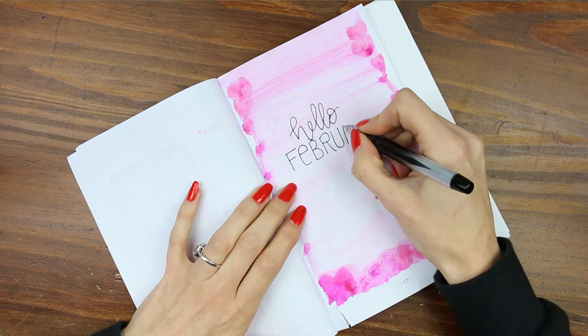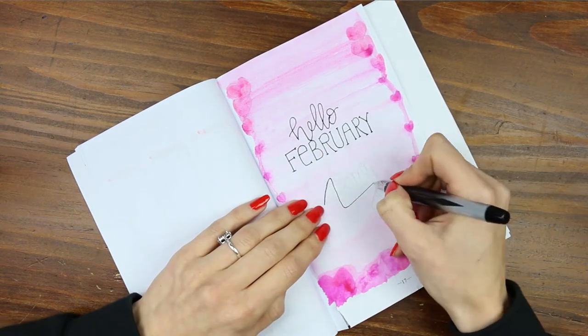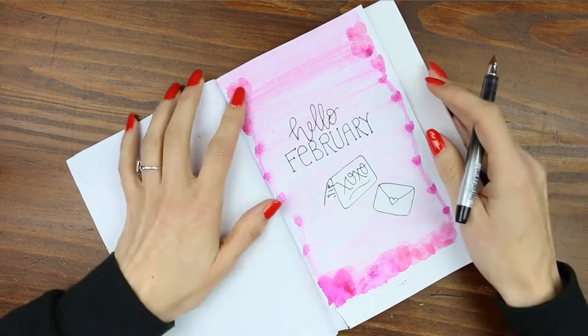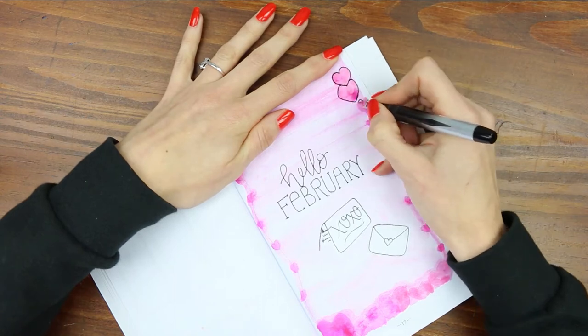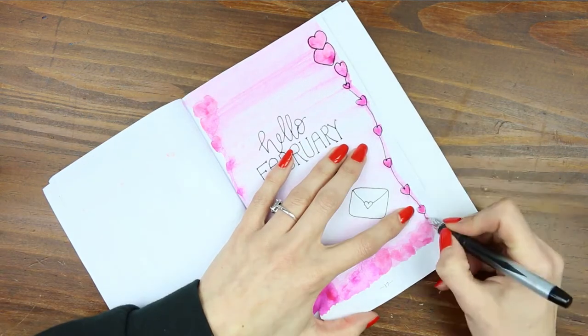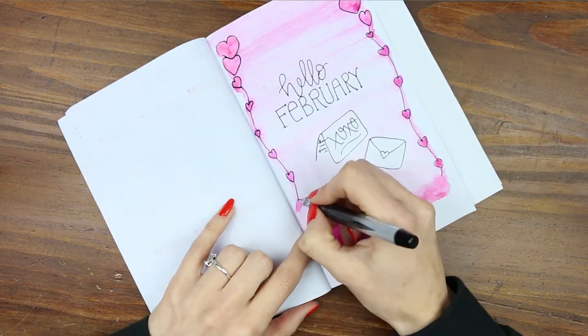And then I'll just write down hello February and as it is Valentine's month I decided to draw a little love note and a little envelope. The pen that I'm using is a fountain pen, I think it's a disposable fountain pen you call them, because you don't buy the ink refills, you just throw it away when it is empty. Again I will try and leave a link to this one or one very similar down in the description box.